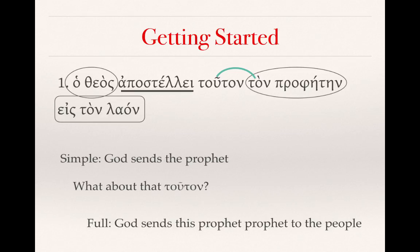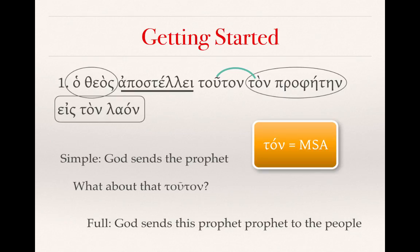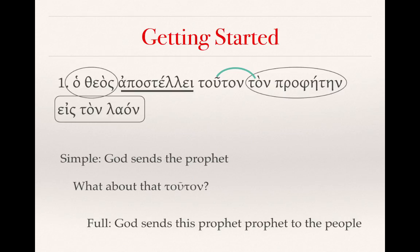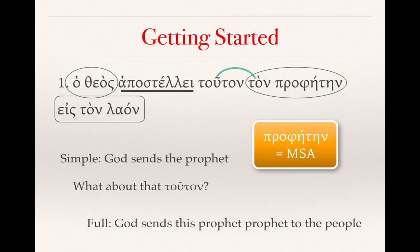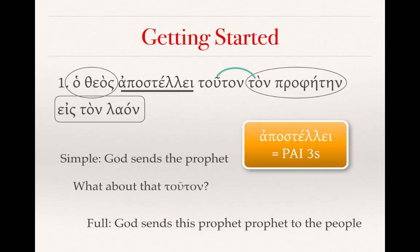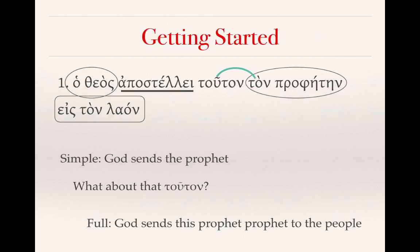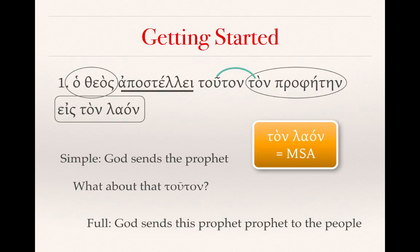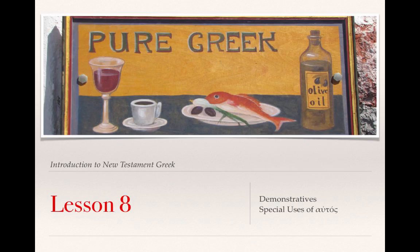A few things to note: touton is a masculine singular accusative form of the demonstrative. Even though prophētēn appears to have a feminine singular accusative ending, it is actually a masculine noun formed after nouns of the first declension — which is why it's important to memorize your vocabulary. We would parse apostellei as present active indicative third singular, and ton laon is in the accusative case because it follows the preposition eis. That's all for Lesson 8 — look forward to seeing you all in class. Thank you for your attention.